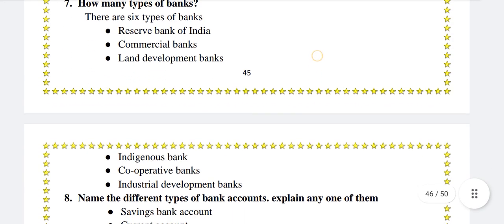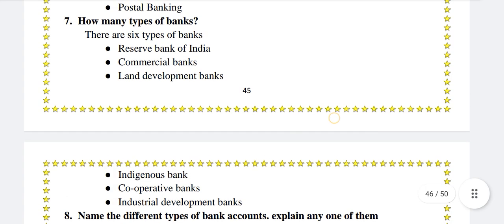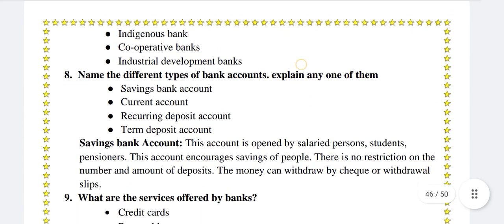How many types of banks are there? There are 6 types of banks: Reserve Bank of India, commercial banks, land development banks, indigenous banks, cooperative banks, and industrial development banks.